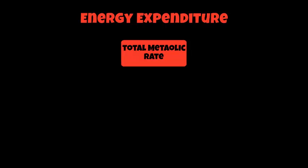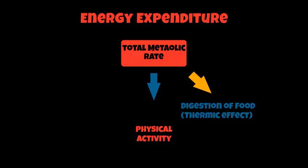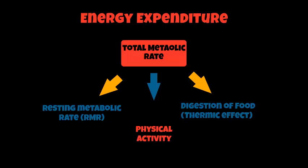We're now moving on to energy expenditure, which we will look at in more detail in lessons. Energy expenditure relates to your metabolic rate — the rate of energy expenditure within your body. It is based on a number of things: the thermic effect of digesting your food, how many calories you burn during physical activity, and your resting metabolic rate, or RMR. We're going to look at the calculation to find your RMR, which you'll work out and bring to your next lesson.